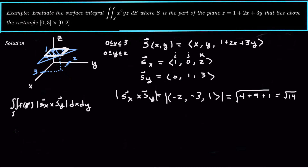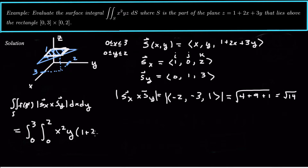So our integral is going to become the integral from 0 to 3 for x, integral from 0 to 2 for y, and then we have x squared times y times z. And z, in terms of our parameterization, is 1 plus 2x plus 3y, then multiplied by the Jacobian, square root of 14. That's the magnitude of sx cross sy, dy dx. So there's our integral to be evaluated.